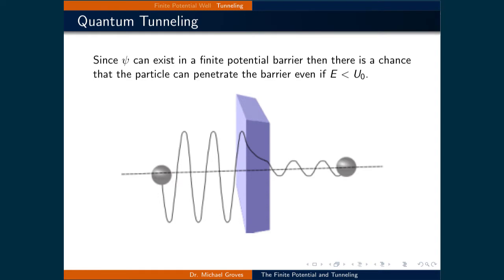Therefore, the particle exists inside the barrier and, as a result of satisfying boundary conditions, must also have a chance of being on the far side of the barrier, even if it has insufficient energy to climb over it.